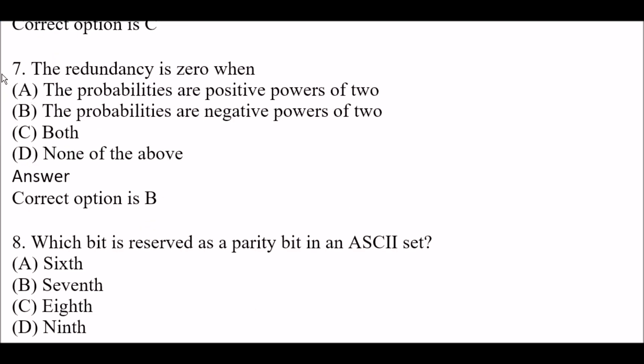Next question: The redundancy is 0 when — Option A: the probabilities are positive powers of 2. Option B: the probabilities are negative powers of 2. Option C: both. Option D: none of the above. The right answer is Option B, the probabilities are negative powers of 2.